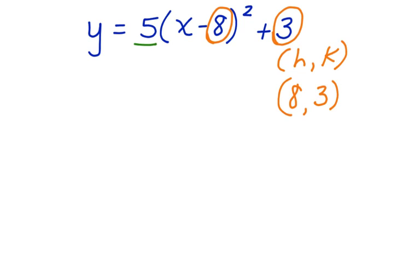The leading coefficient, a, equals 5. 5 is positive, so our parabola is going to open upward.